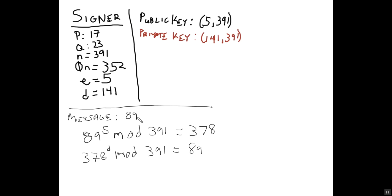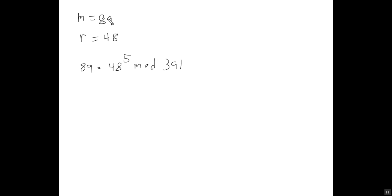Now, what if we want the signer to verify that the message is in fact from us, but without knowing what the message is, so we can then send it on to another person? We take our original message m and generate a random number between 0 and n — I picked r=48. We compute m prime as m multiplied by 48 raised to e, mod n (391), which comes out to be 65.